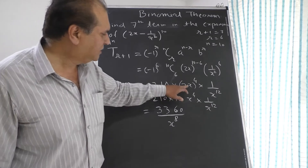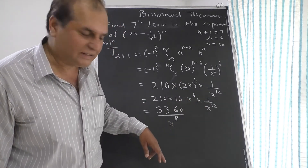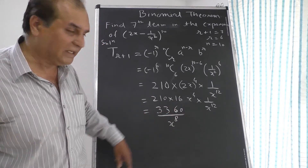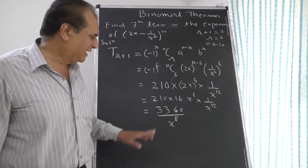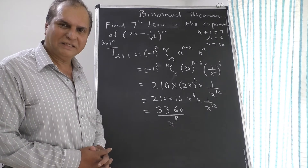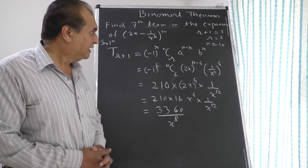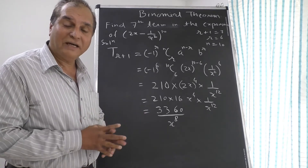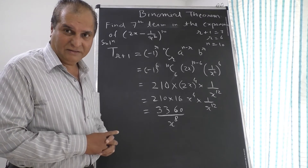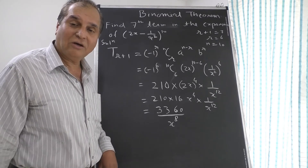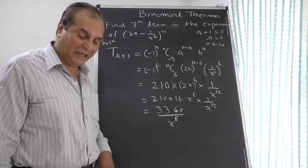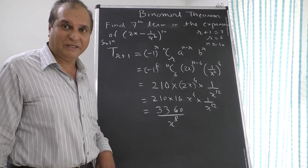Now x^4 times 1/x^12 gives 1/x^8 by index rules. So the answer is 3360 upon x^8, or equivalently 3360 x^(−8). Using this formula you can find any particular term. Any sum from your textbook that you are not getting or going wrong, you can ask me.